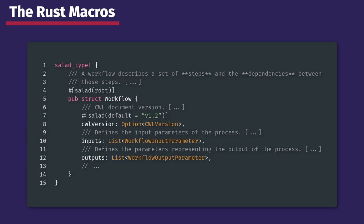We decided to have the schema-salad tool write only a set of Rust macros instead of the actual code. Macros are a piece of code that are expanded during compilation into more verbose code using a technique commonly known as metaprogramming. So the boilerplate implementation is squeezed into just a type definition — in this case the struct Workflow with all its fields and a bunch of comments. You can see, for example, on line 8, the field cwl_version, which is of type Option, and an attribute that sets it to a default value when the option is None. This is the solution to allow developers to easily modify types without having to go through all the boilerplate required to make the code work.